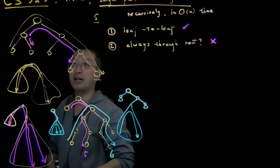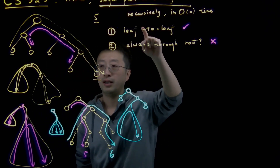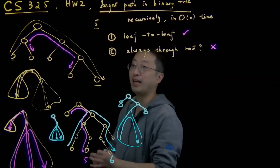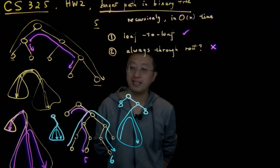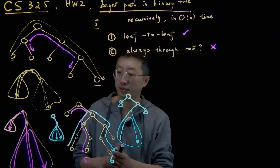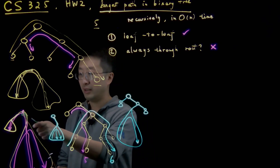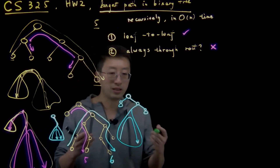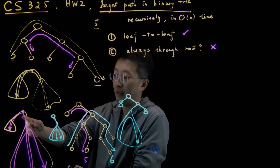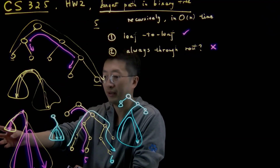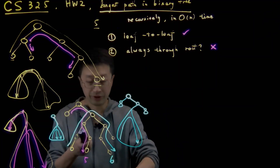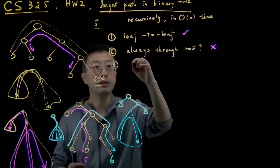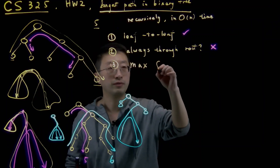Does this give you hints on how to solve it recursively by divide and conquer? So there are two things from this analysis. The default way — if you have to go through the root — is to go deepest on the left side, deepest on the right side, and concatenate them. That's the best solution that goes through the root, but it's not always the best. You could be completely on the left or completely on the right. So the third observation is that the best path within the whole tree should be the maximum of three cases.